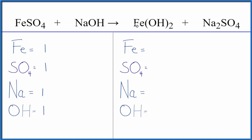On the product side, we have one iron, we have one sulfate, two sodiums, and then two hydroxides.